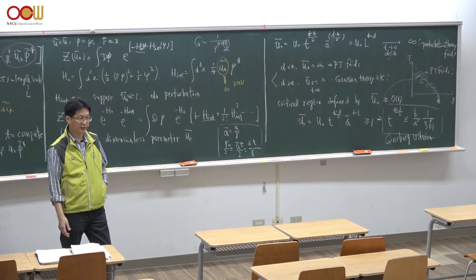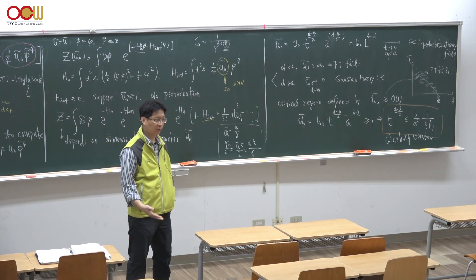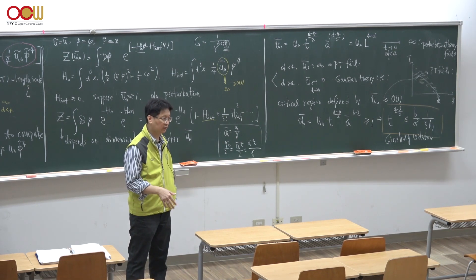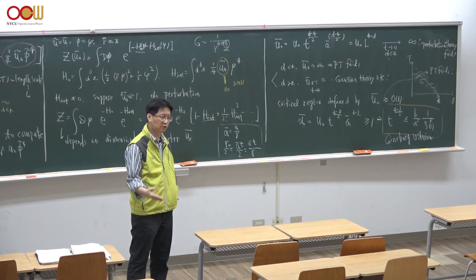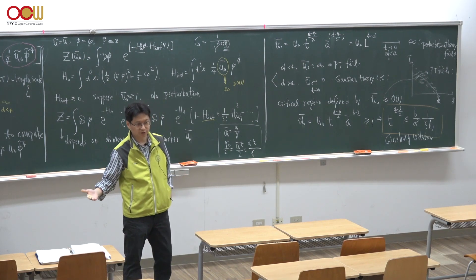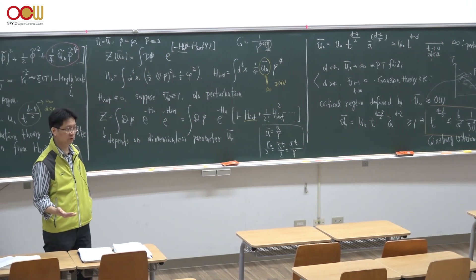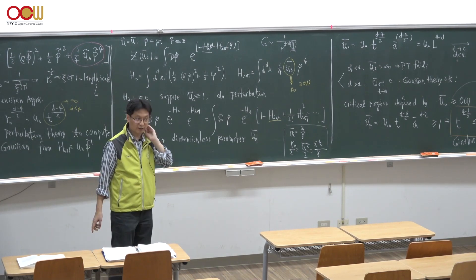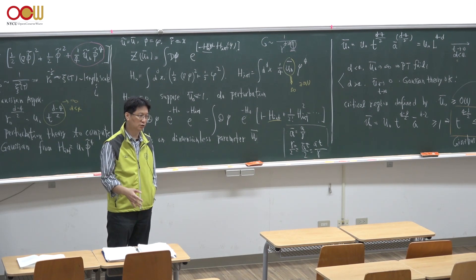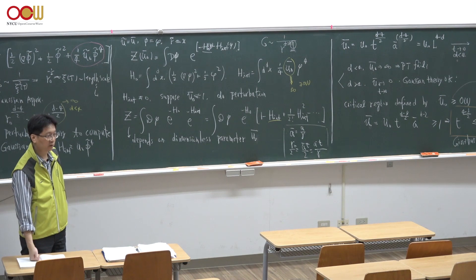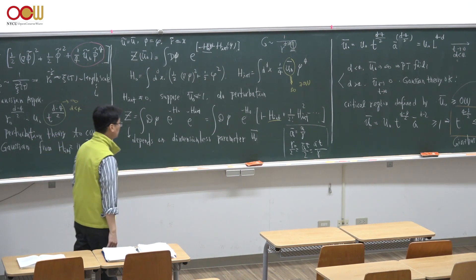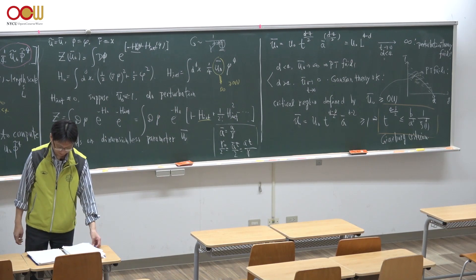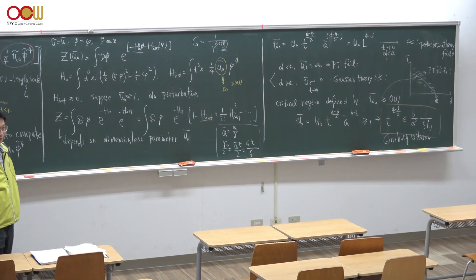We understand what goes wrong within the Landau or Gaussian approximation, but it is not clear at this point what we need to do. The perturbation theory fails — what else can we do? The answer is: we should do the so-called renormalization group study on this phi-4 theory. That's the final section of this course, which is again a very important concept regarding phase transitions. We have come all the way to almost the critical temperature and encountered such a trouble, but we will overcome it in the later part of this course.